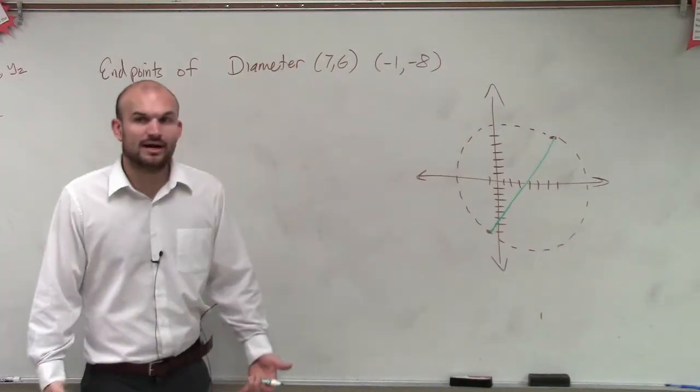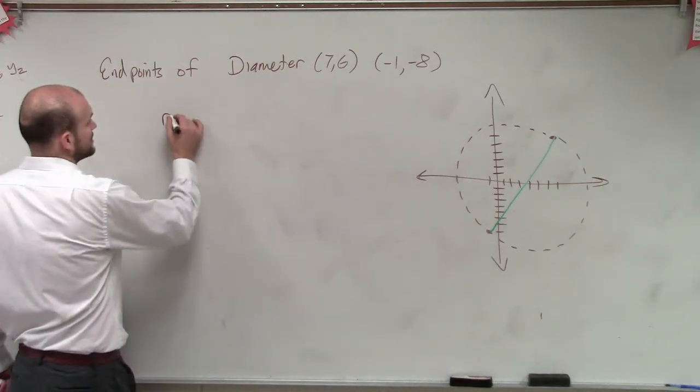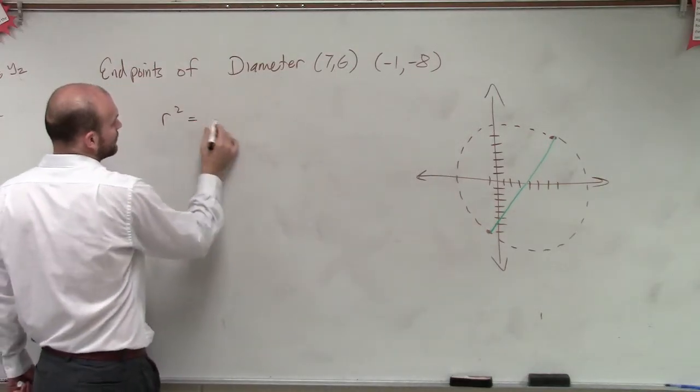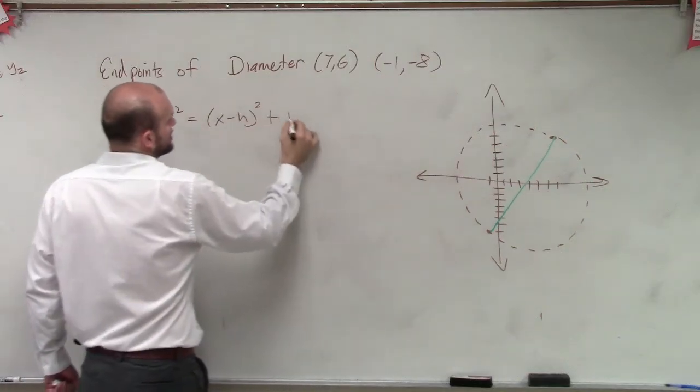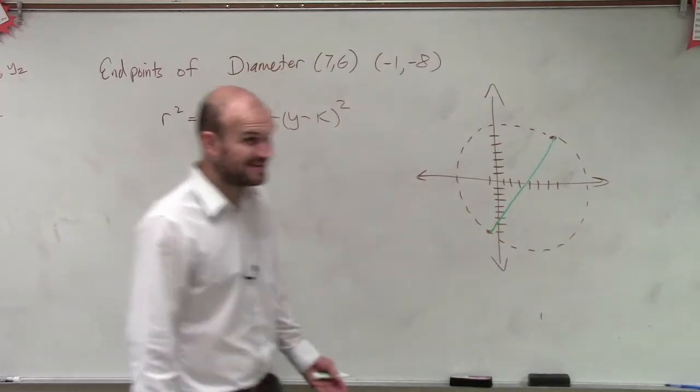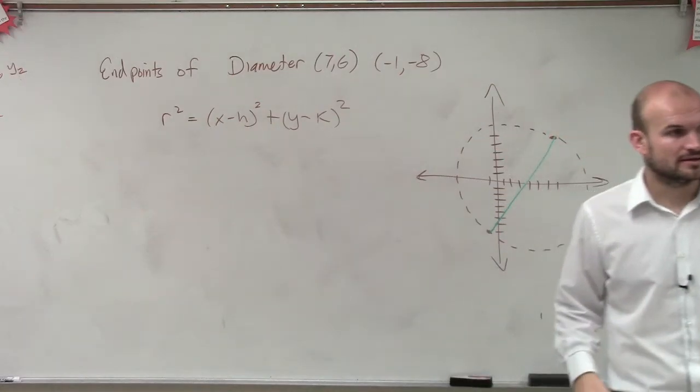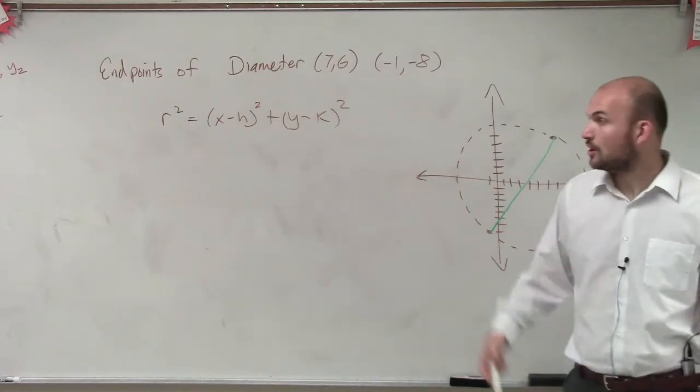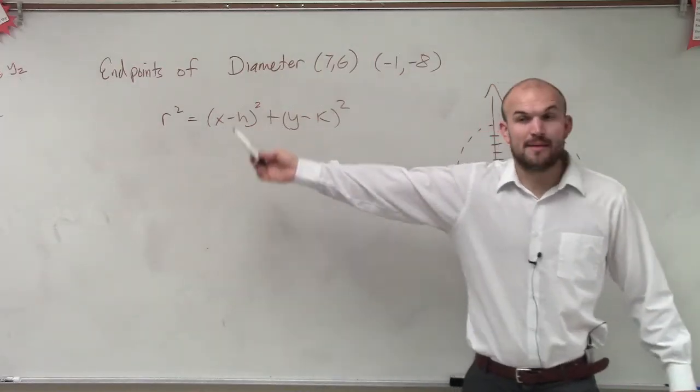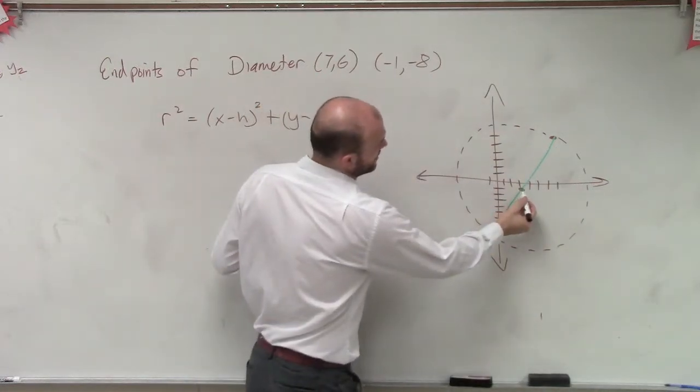OK. So now, if I want to define the equation, we know the equation of my circle looks like this: r² = (x - h)² + (y - k)². So to find everything, there's a couple points we need to figure out. One, we need to figure out what h and k are. So remember, h and k is going to be my center, which is going to be roughly right around here.